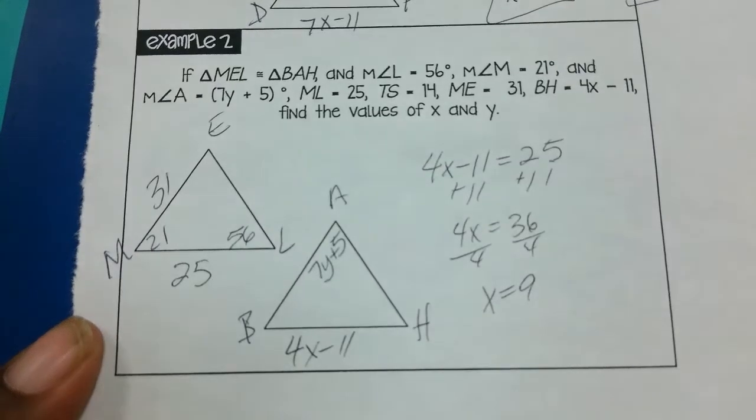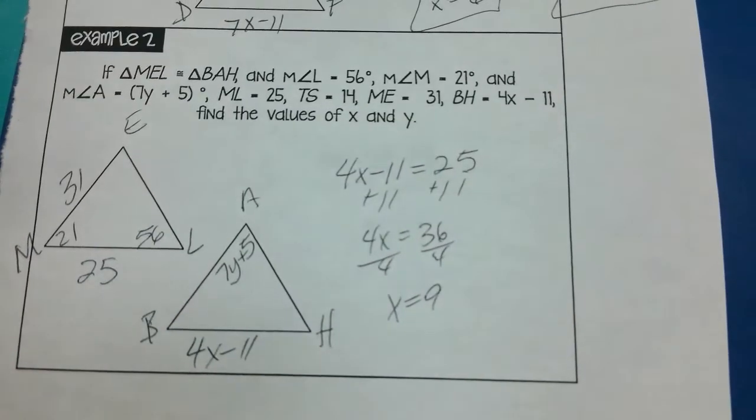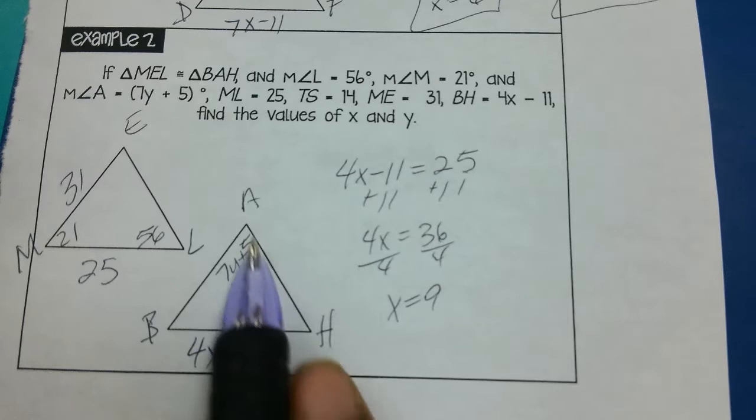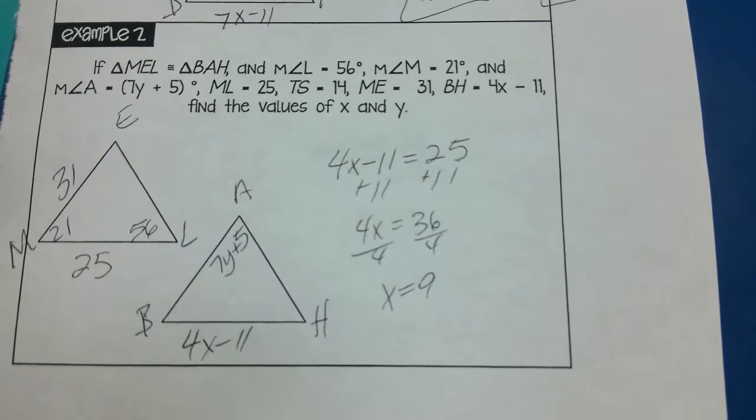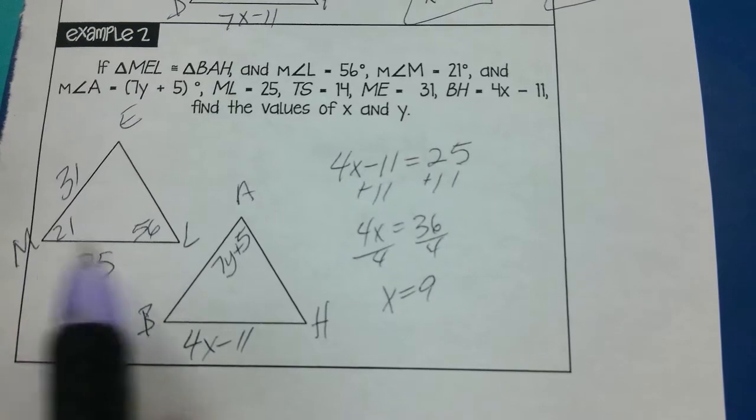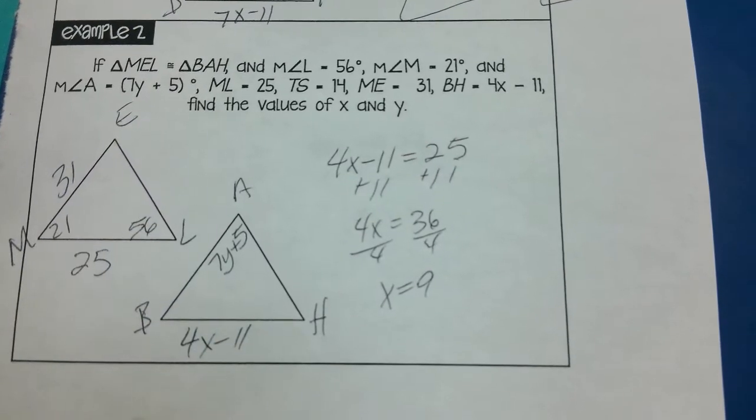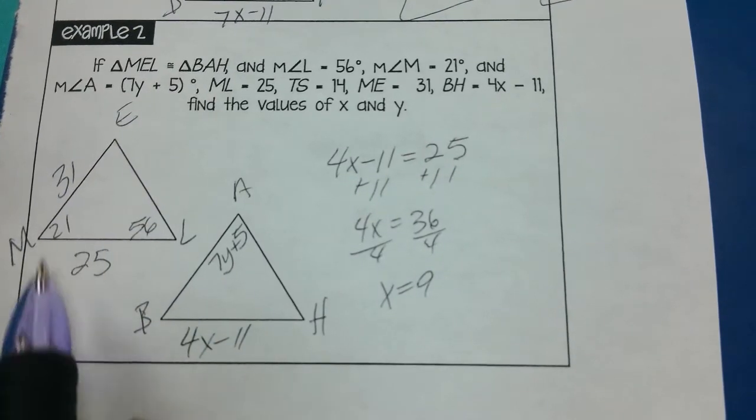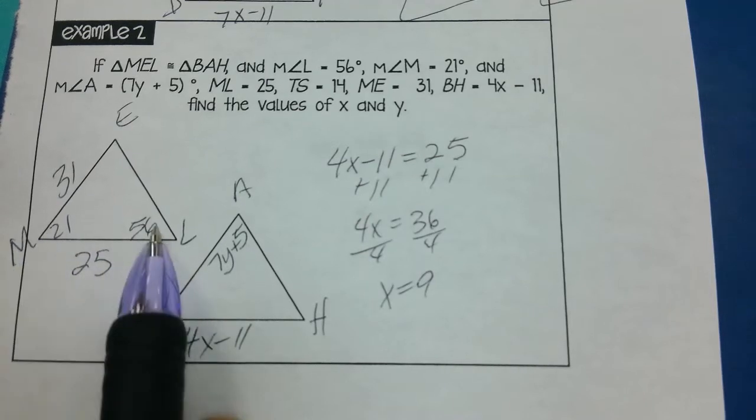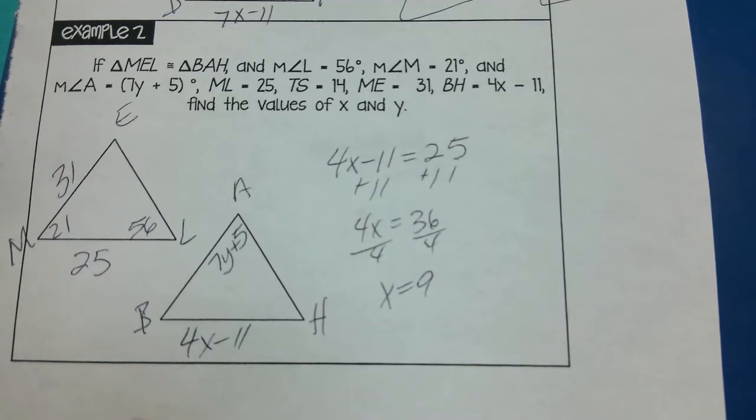Okay, and now I'll do the same thing for my y. Well, y is right here at this angle, so angle A. I see angle A corresponds with angle E, but I don't know what angle E is. I know that all three angles of a triangle add up to be 180 degrees. So if I add these two together, 21 plus 56, that's going to be equal to 77. And then if I subtract that from 180, that gives me 103. So this third angle is 103.